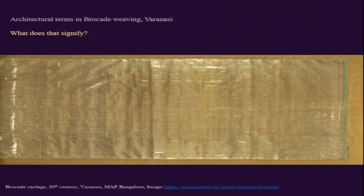In the Jacquard loom technique, instead of a person sitting and raising sets of threads, punch cards are used to pass those particular sets of threads. These punch cards are created keeping the reference drawings in mind, with the entire drawing divided into a grid-like format, which remains at the heart of all weaving.